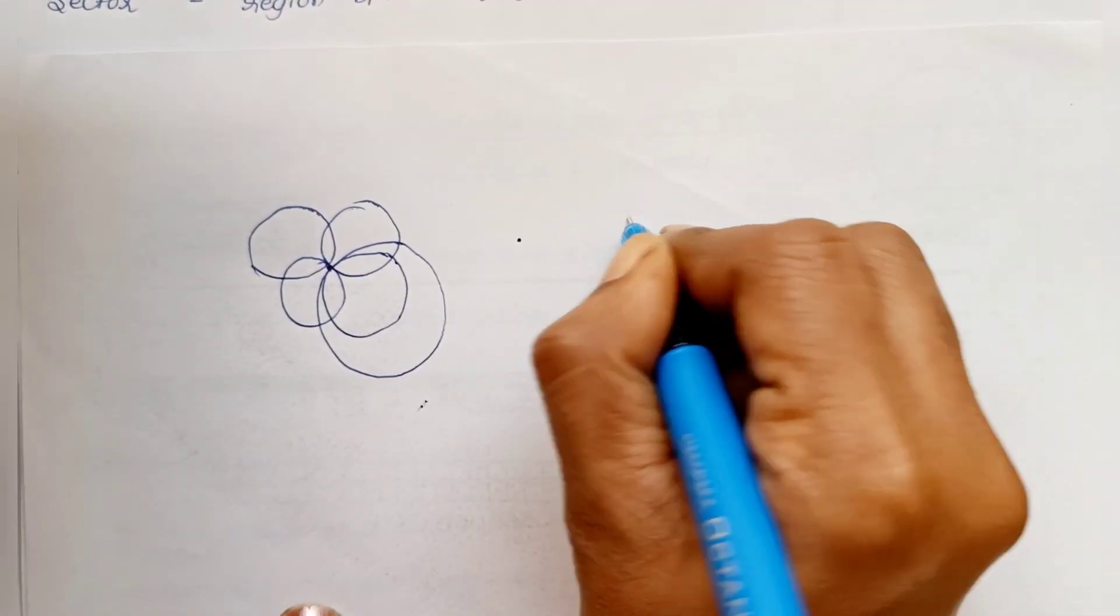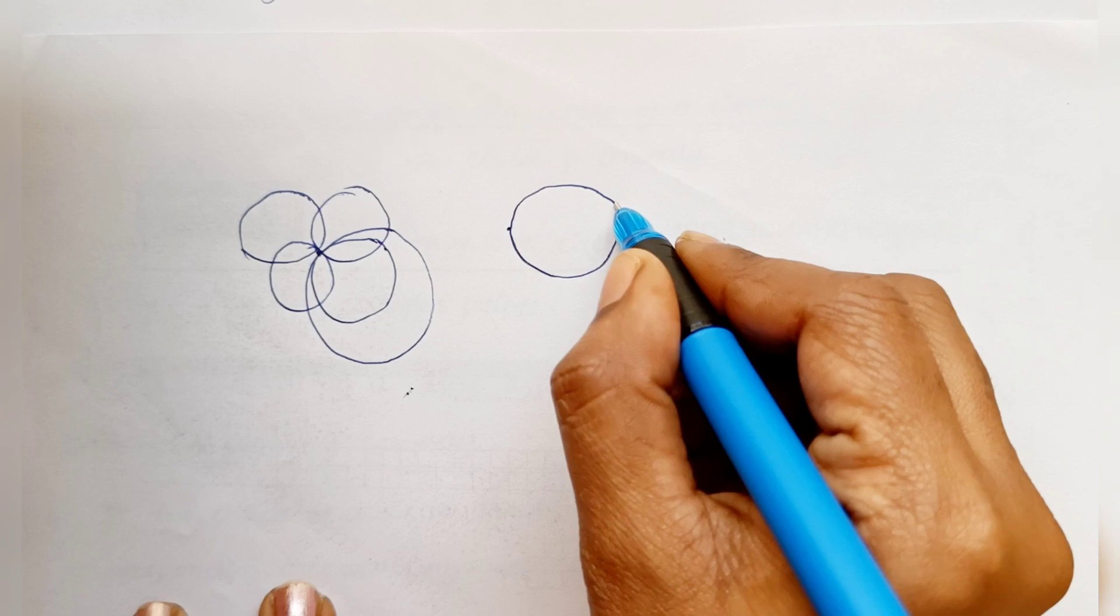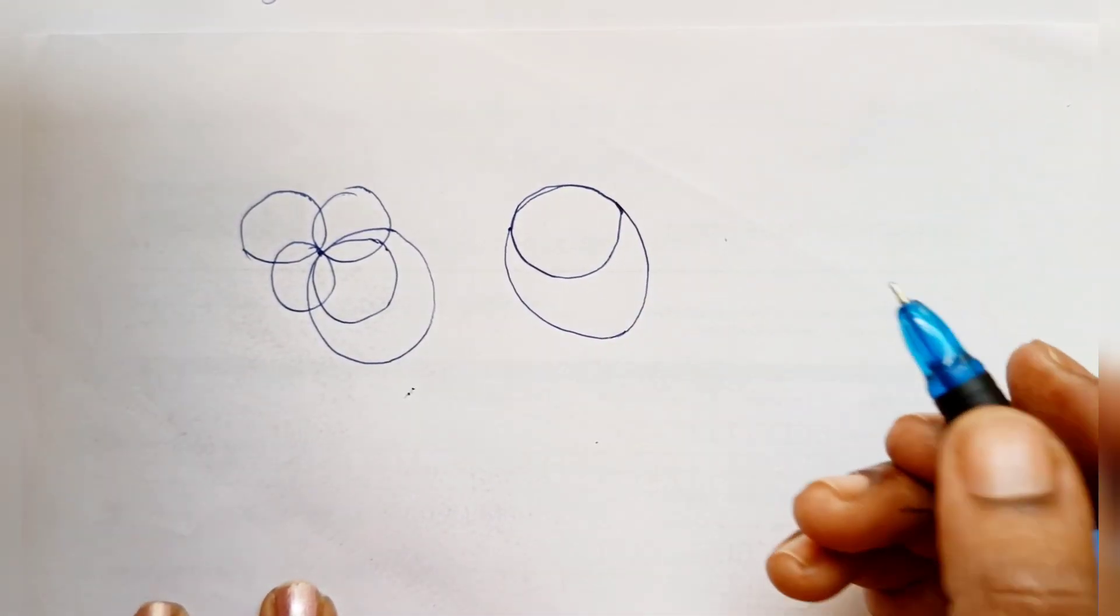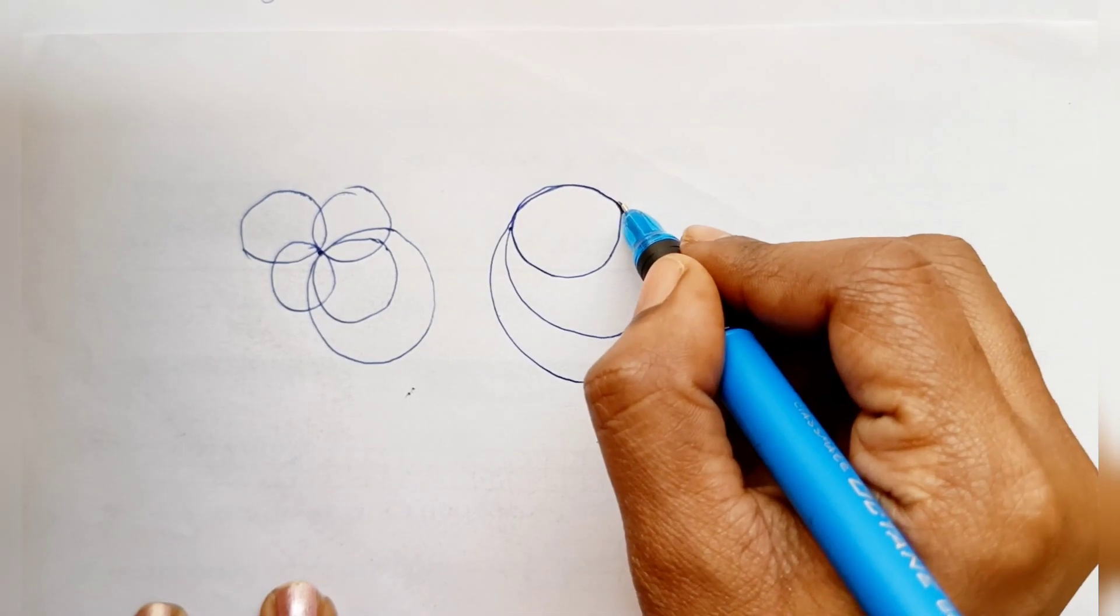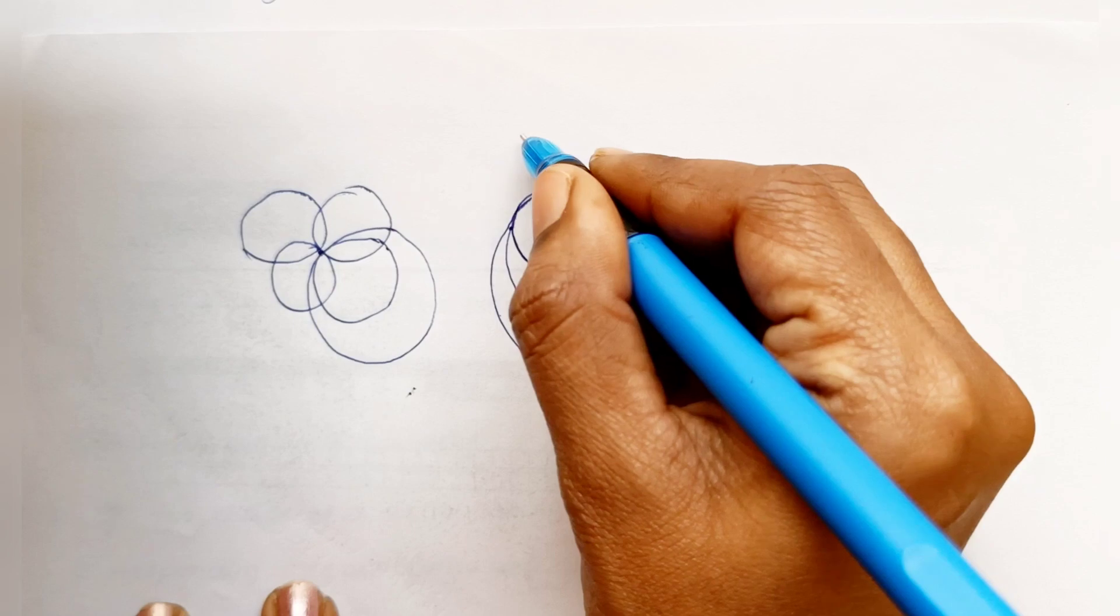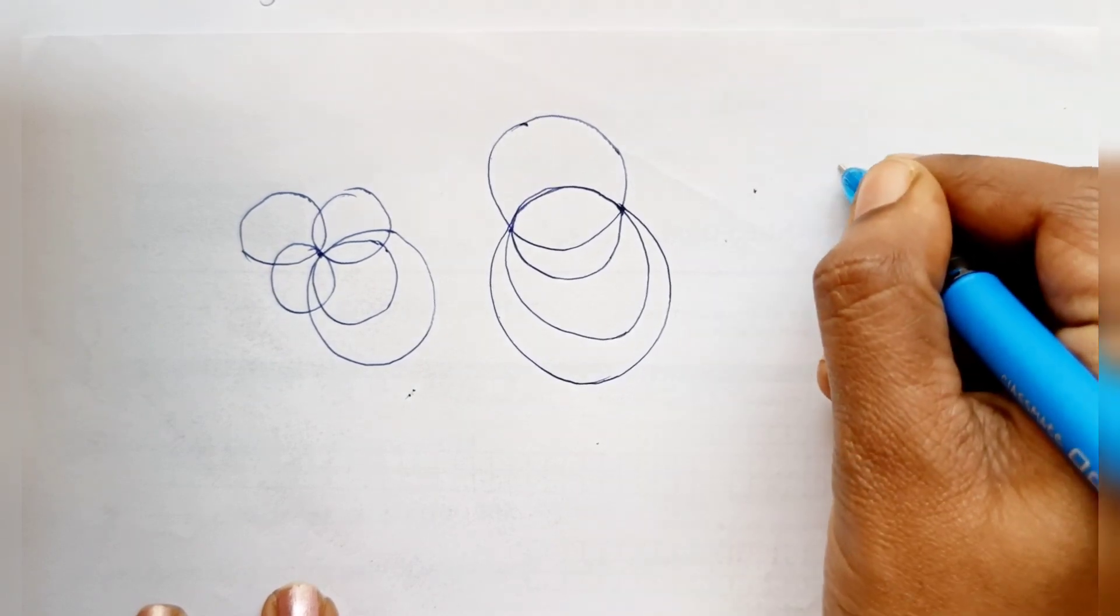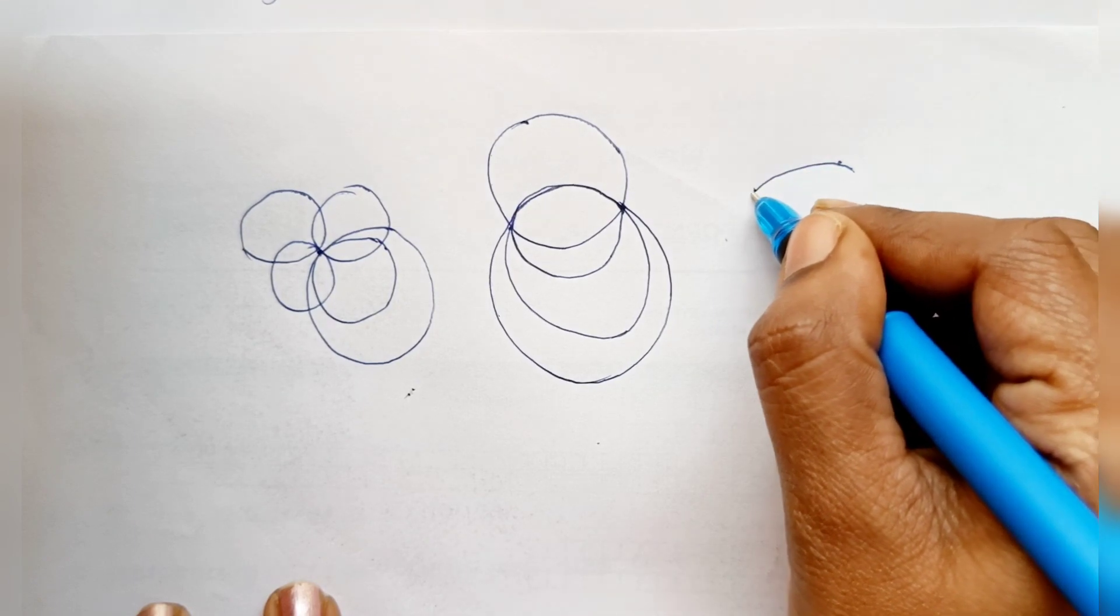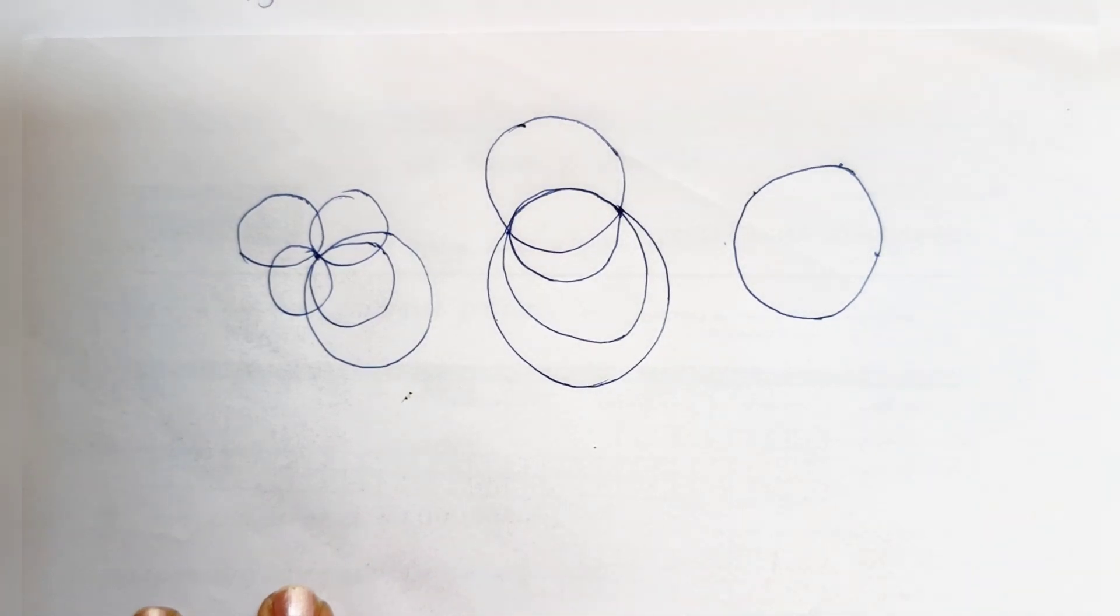But when you have three non-collinear points, we can draw only one circle. So this is the theorem.